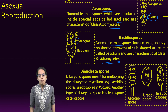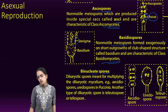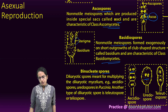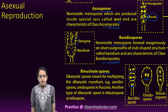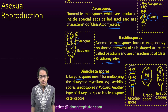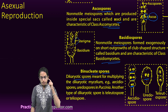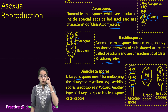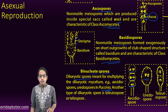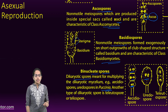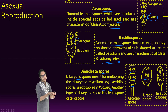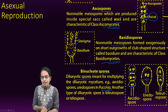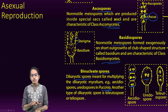The next is binucleate spores. In each of these, as you can see, there are two nuclei — we call them binucleate. These are dikaryotic spores which are meant for multiplying. Puccinia is a good example, where two spores are present together and we call it a binucleate spore.